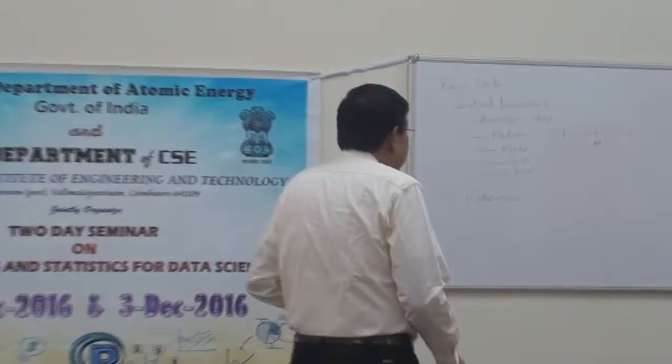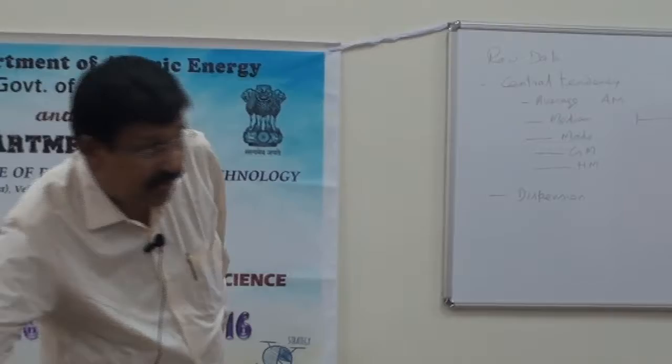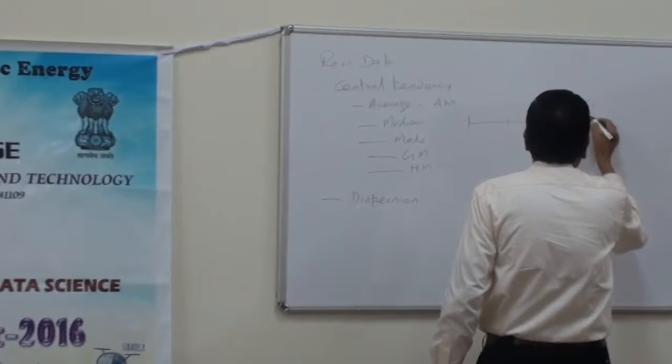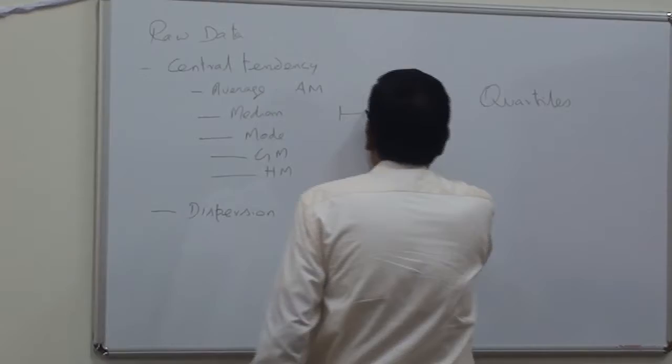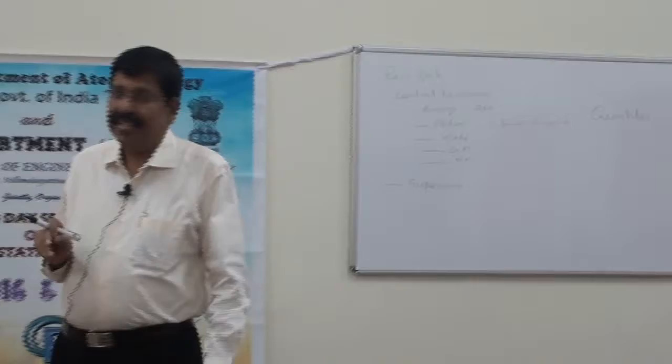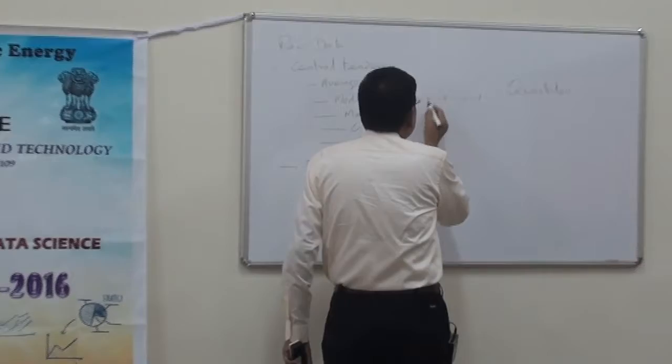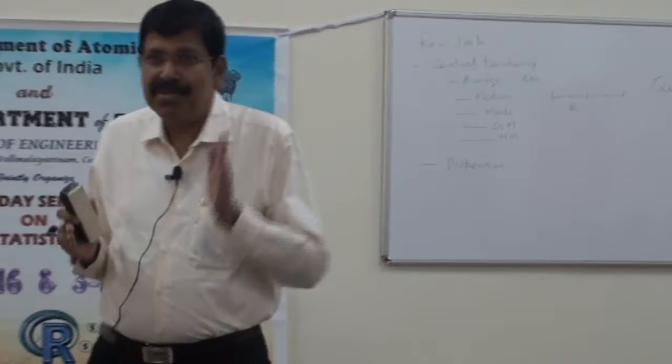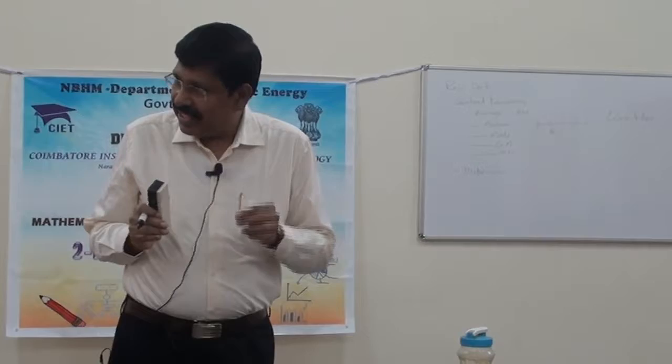There is another set of positional averages called quartiles, which divides the whole series into four equal parts. Q1 is the first quartile, below which 25% of the values are located. Suppose if the marks are ranging from 0 to 100, it may be mark 35 or 36, below which 25% of the students — say 15 students — have scored.